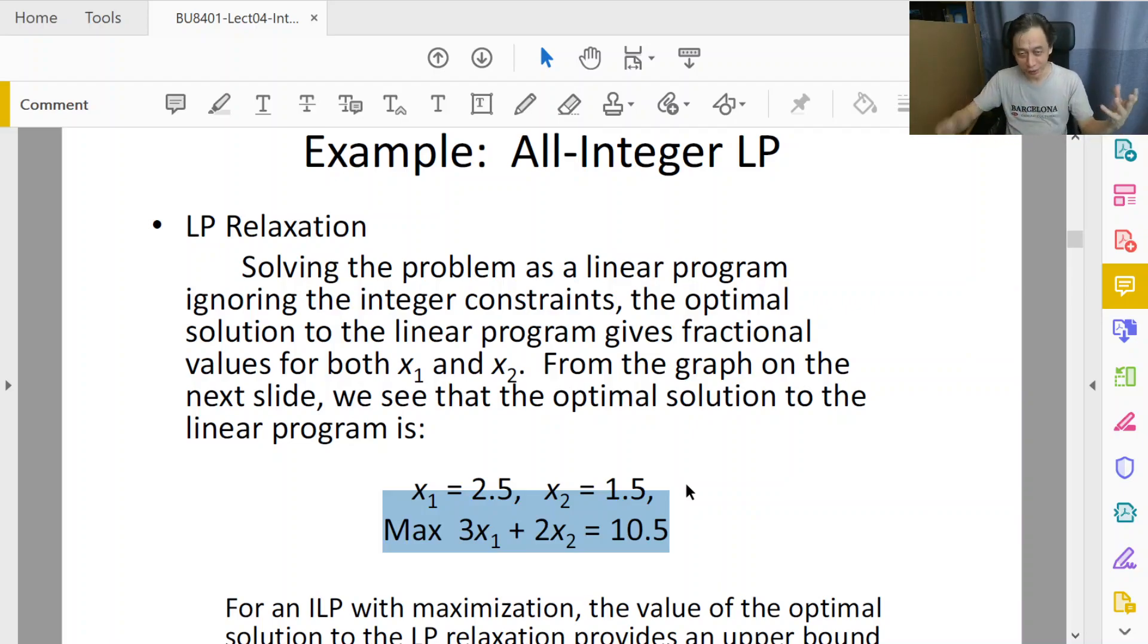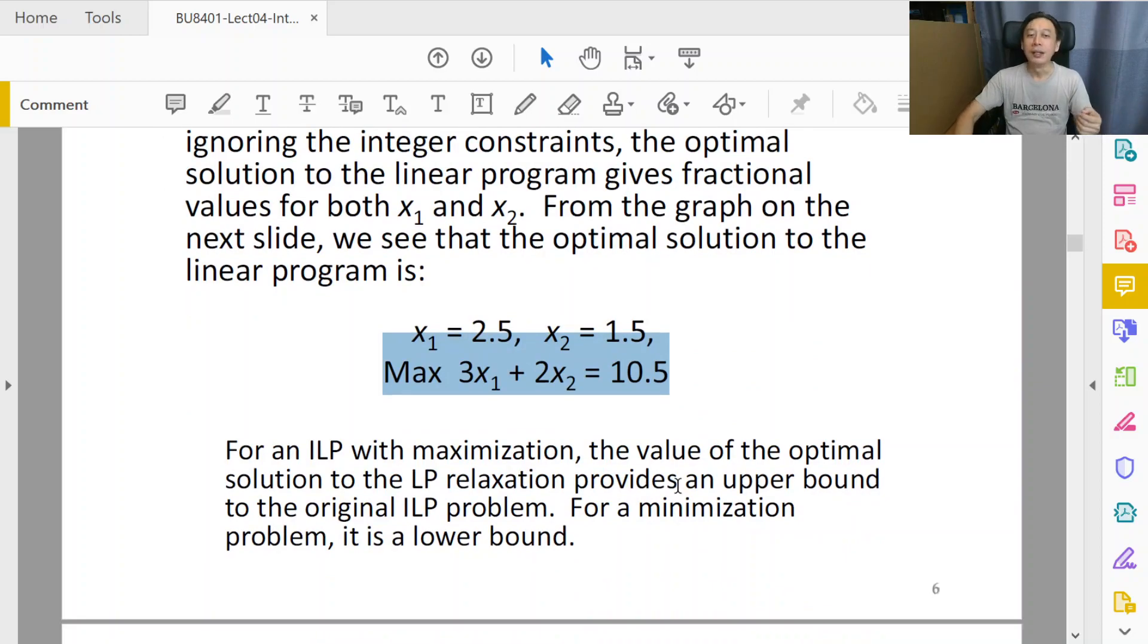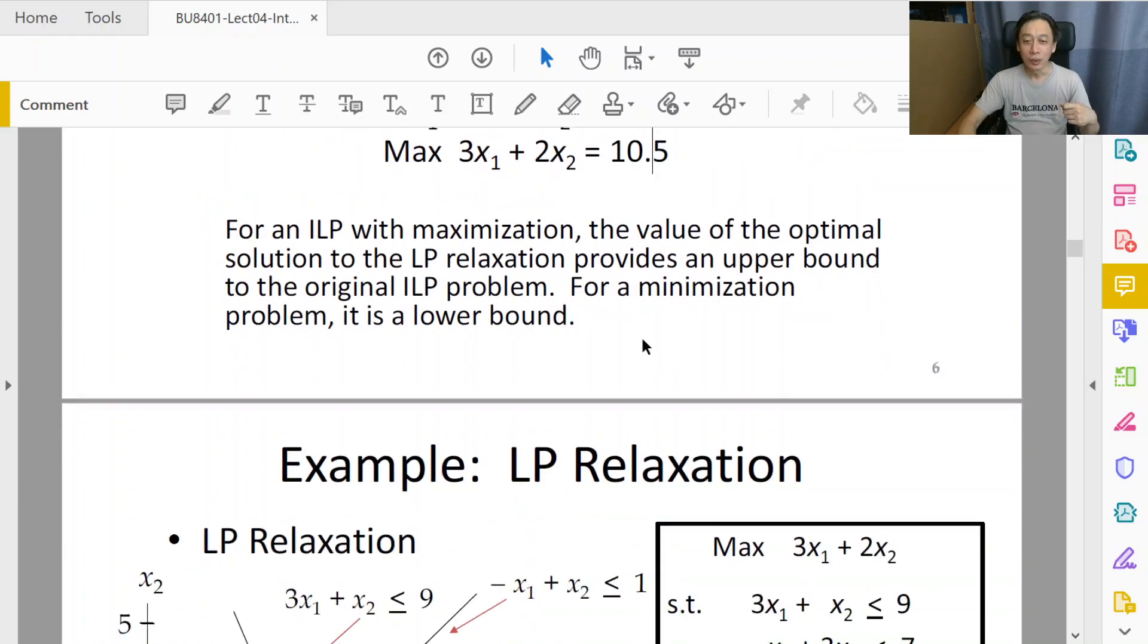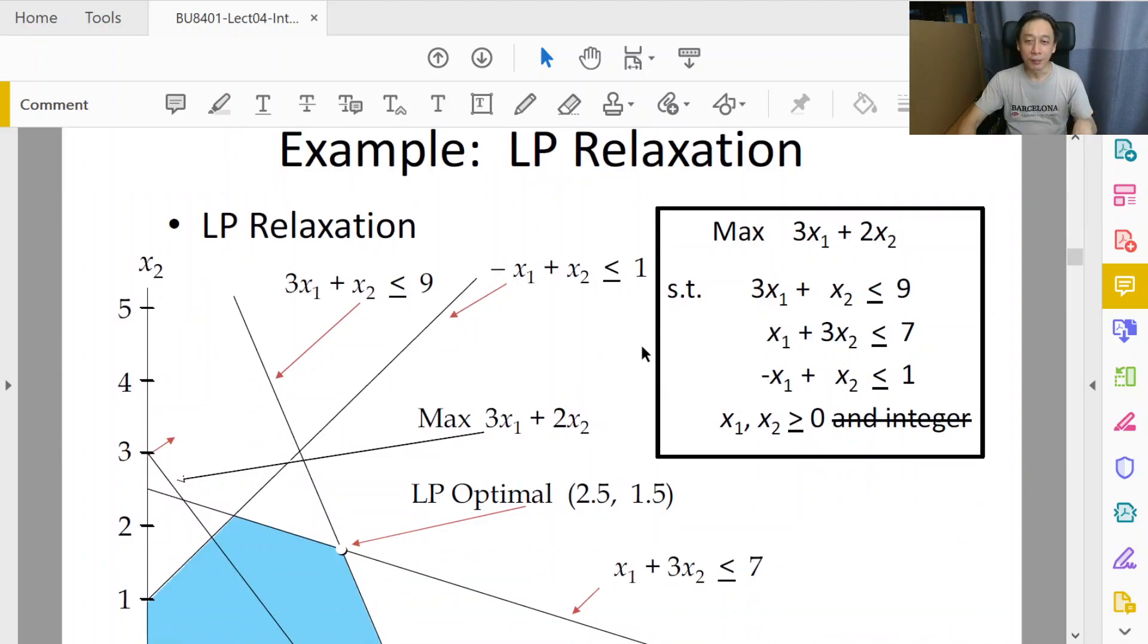Here will be the idea: we try to round. If we apply rounding, x₁ should be 3, x₂ will be 2. And we know it's not right because we know that the actual answer should be 3 and 0. So what's going on if we plot it on the diagram like this?